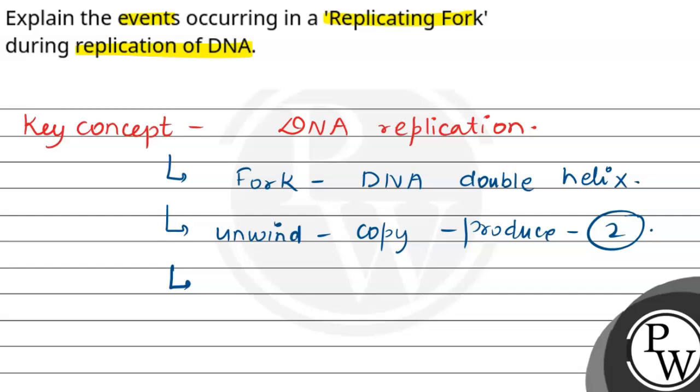The replication fork is a critical site where various events occur to ensure accurate and efficient DNA replication. Now, we will try it in a detailed way.